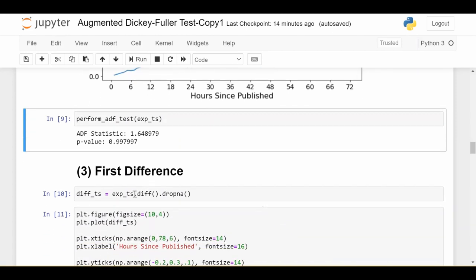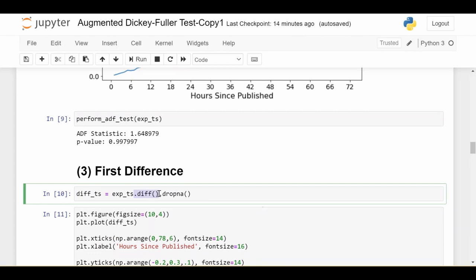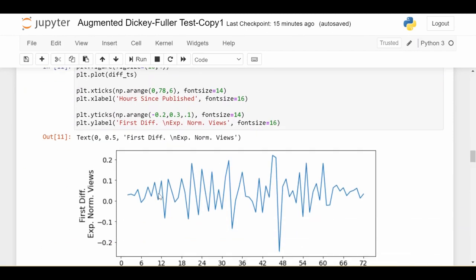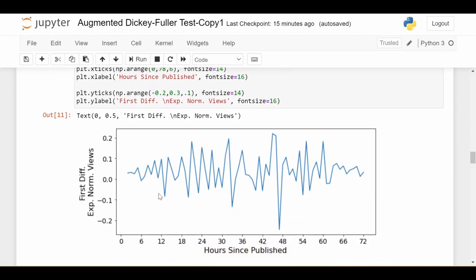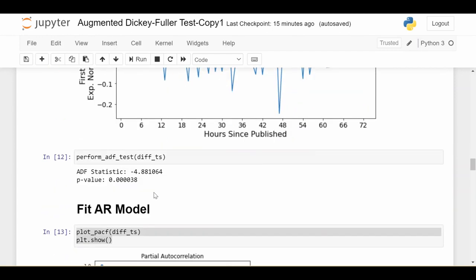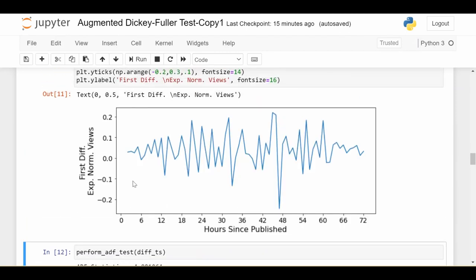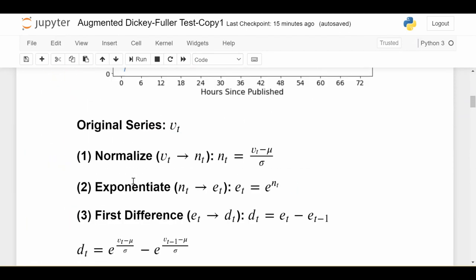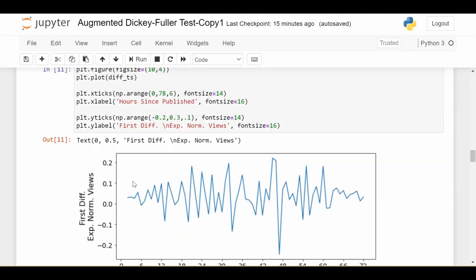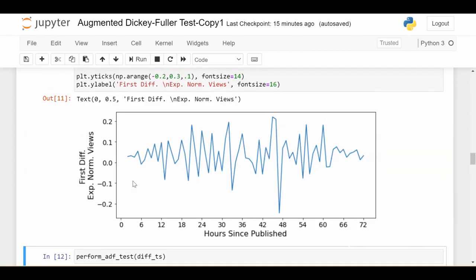We'll go ahead and do a first difference, which we can easily do in pandas with the .diff function. This takes the difference between the time series and the lagged 1 version. Visually, this looks great, looks stationary. We get a p-value of 0.000038, clearly less than 0.05. We have succeeded in taking our original time series and making it stationary.